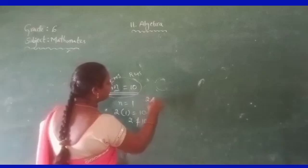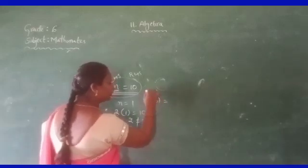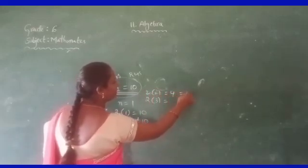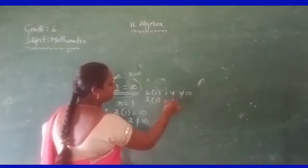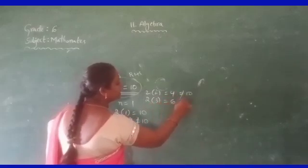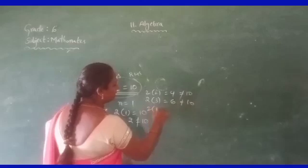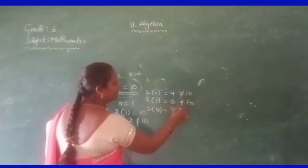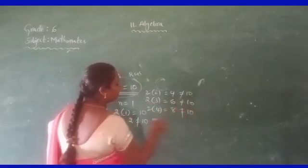Similarly, take 3: 2 times 3 is 6, and 6 is not equal to 10. Take 4: 2 times 4 is 8, and 8 is not equal to 10.